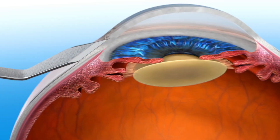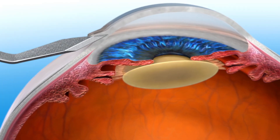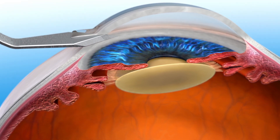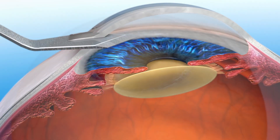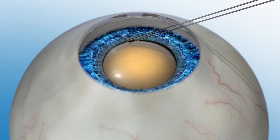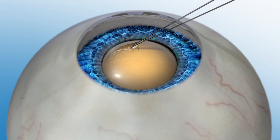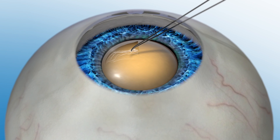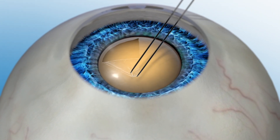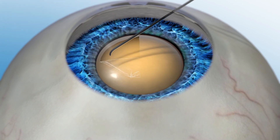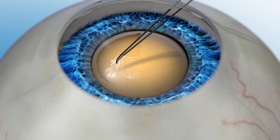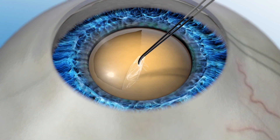During a manual cataract procedure, the surgeon uses a blade to make incisions in your eye and create an opening in the capsule to get access to the cataract lens. This is a critical step in cataract surgery because it can affect how a new, implanted lens will be positioned in the eye. If it's not done with high accuracy, the position of the lens could be off alignment, which may affect your vision after the procedure.